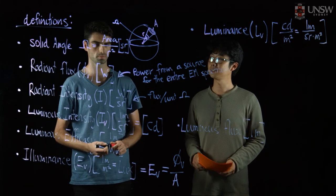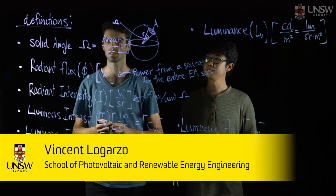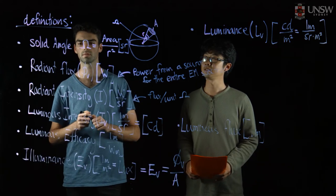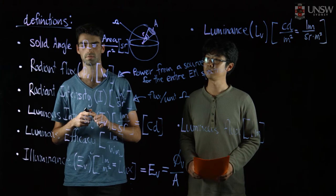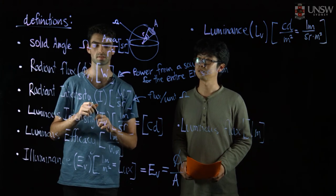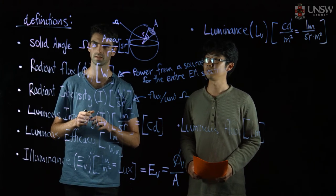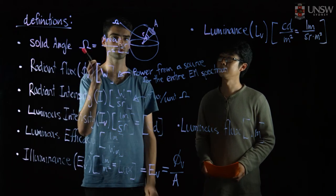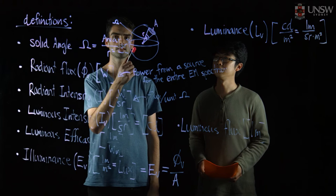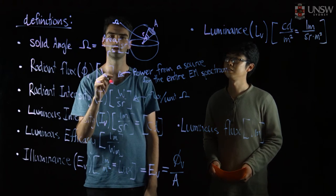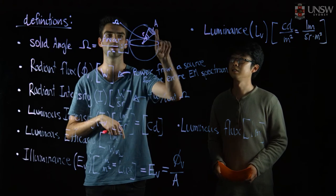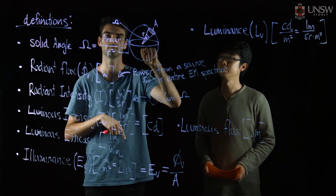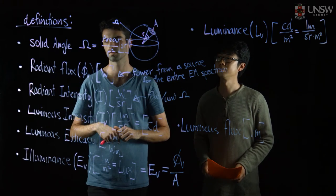Alright, before we get to that, there are a few definitions we need to go through, because there are quite a few different definitions within lighting. So we're first going to go through solid angle. Solid angle is the angle subtended by an area from a point source, and that is that particular area divided by the square of the distance from that point source.